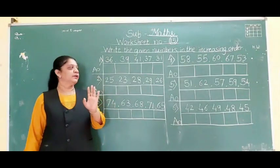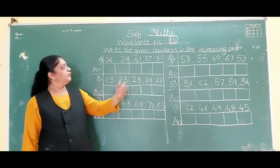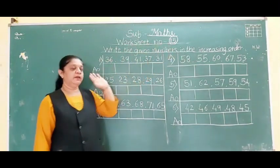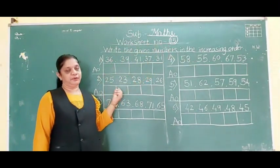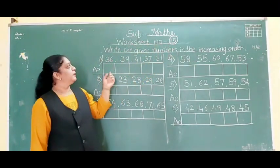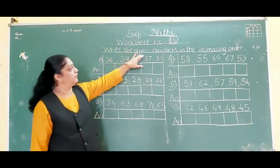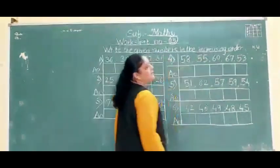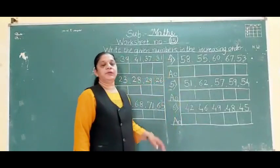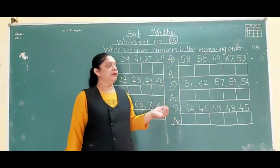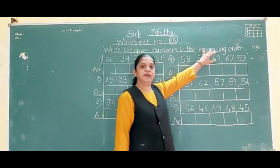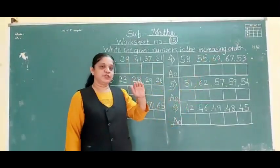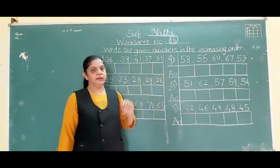Hello students, today we will start worksheet number 50: ascending and descending order. Write the numbers in the increasing order. Increasing means small to big, which means ascending order. Ascending order means small to big.